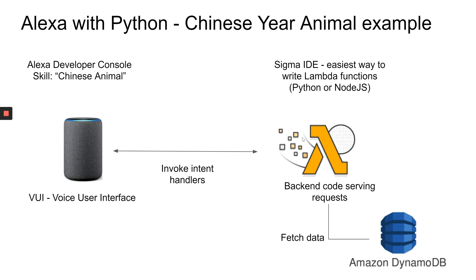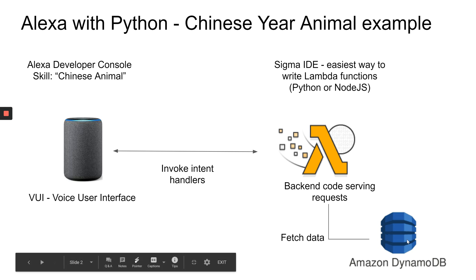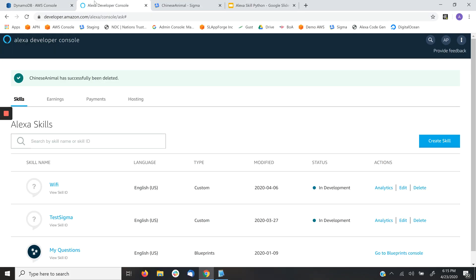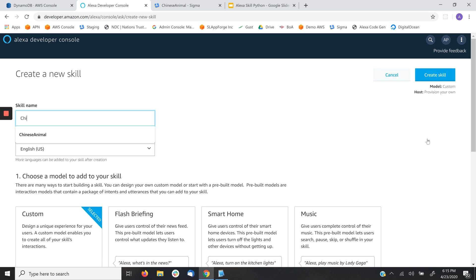The first part of this exercise will involve the creation of the voice user interface, which is the skill aspect running on the Alexa. The next part is going to be the backend code, which is the Lambda function. Let's get started — I'm going to go to the developer console and create a new skill called Chinese Animal, and select that it's going to be a custom skill.